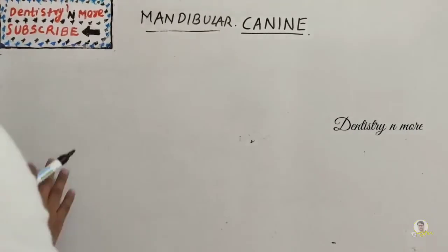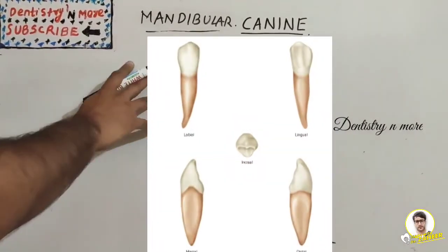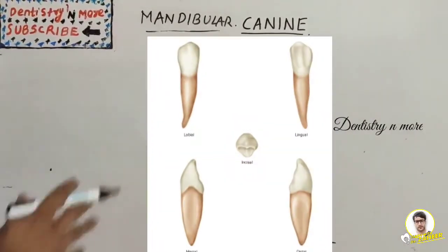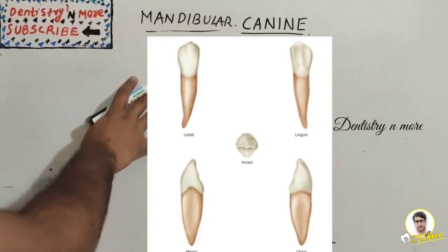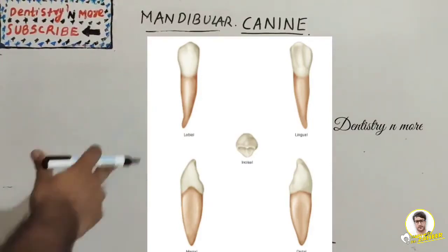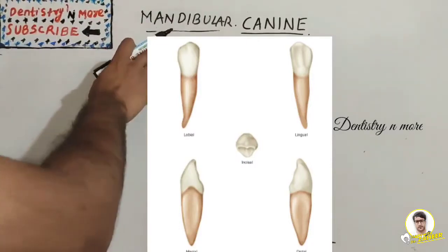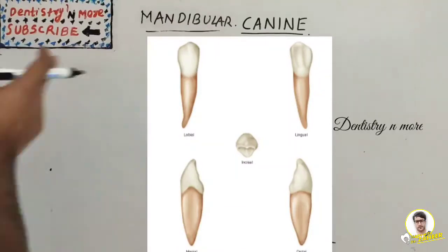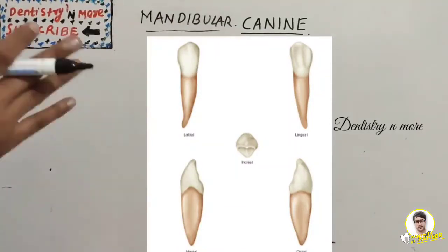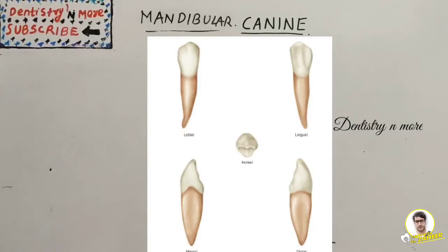Hello everyone, welcome back to another session in Dentistry and More. We are continuing our dental anatomy sessions. Last session we finished maxillary canine; this session is about mandibular canine. After that we'll move on to the premolar section. We're studying mandibular canine right after maxillary canine because studying canines together is easy as many features are common.